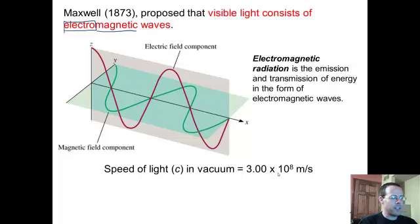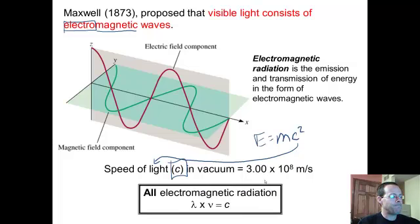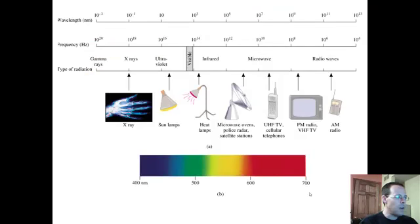Speed of light in a vacuum is three times ten to the eighth meters per second. It is always C, very most importantly. We've got E equals MC squared, and this C right here is the speed of light. All electromagnetic radiation travels at the speed of light in a vacuum. We have this equation C equals lambda nu.